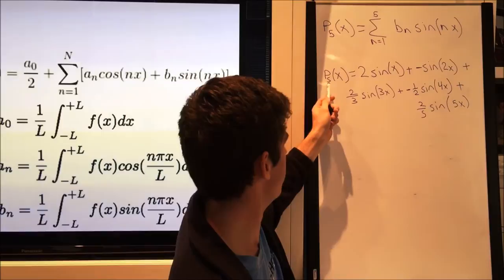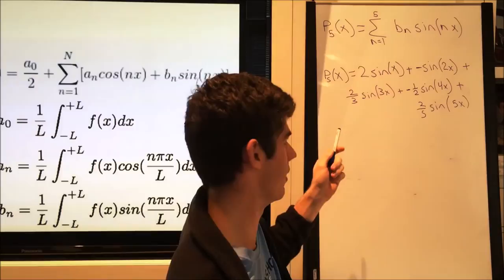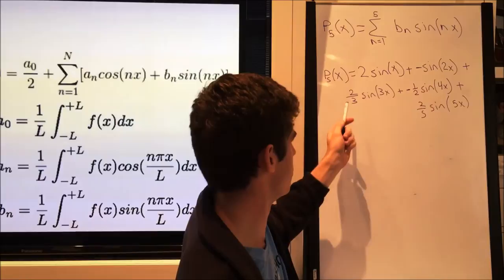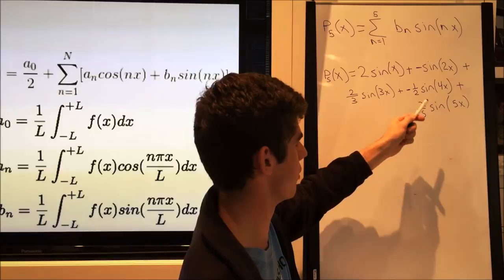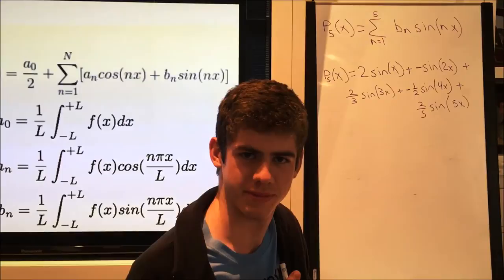So here we calculated it. p_5 of x equals 2, which is the first coefficient that we found, sine x plus negative sine 2x plus 2 thirds sine 3x plus negative 1 half sine 4x plus 2 fifths sine 5x.